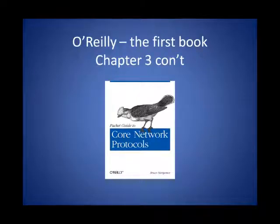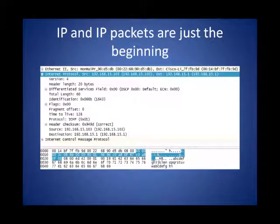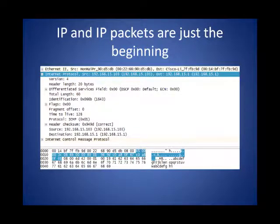For those of you following along, remember that we are in Chapter 3 of the Packet Guide to Core Network Protocols. Here's the packet that we've been working off of — this is a Wireshark capture showing us the individual fields, and at the bottom you can see the hex. One of the important details to get out of this is that we're looking at a header of an IP packet that's 20 bytes long.